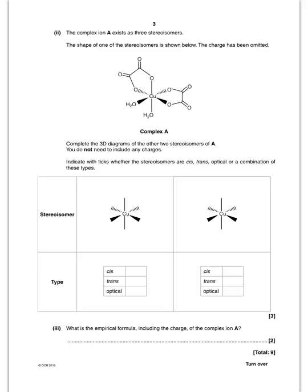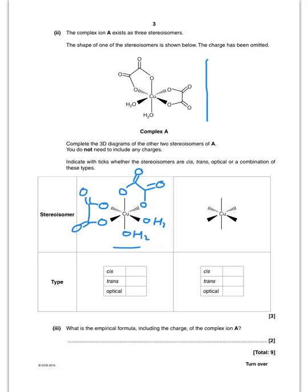The first area isomer I'll do is the optical isomer. If you imagine a mirror there and we reflect it, we will have O, O on one side and O, O on the other, then H2O and H2O, and fill in the double bond oxygens. So that is the mirror image — it is the optical isomer.